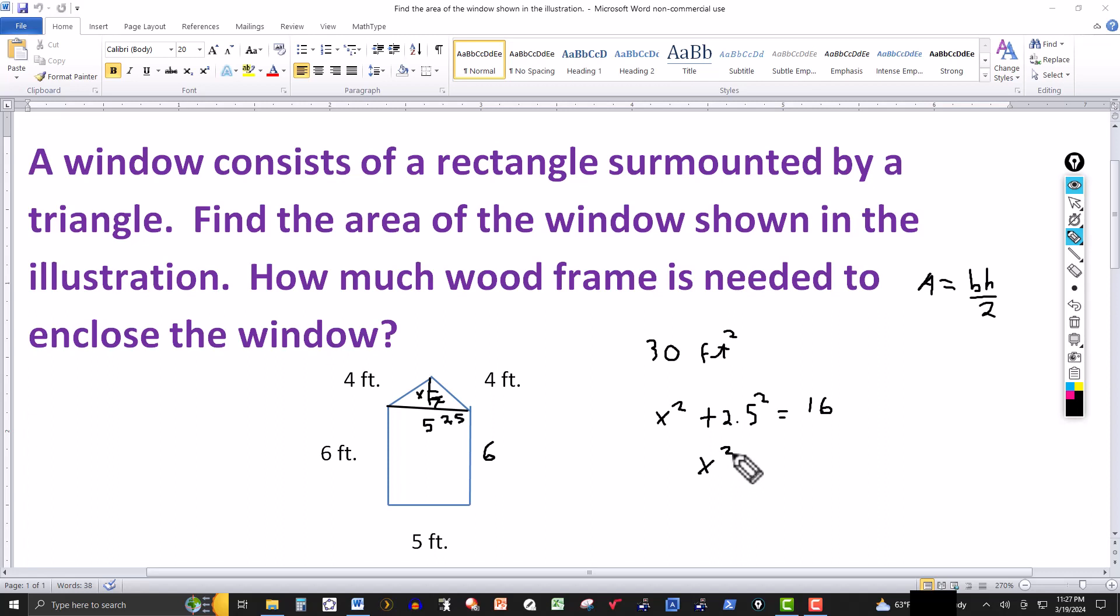First we'll solve for x squared. So this would be x squared. And bring this over to this side. This would give me 16 minus 2.5. I'll put this in parentheses so you can see more clearly. This is going to be squared. So then x squared is equal to 16 minus 2.5 squared. So we compute this out using a calculator and then taking the square root. We'll compute 16 minus 2.5 squared and then take the square root of that.